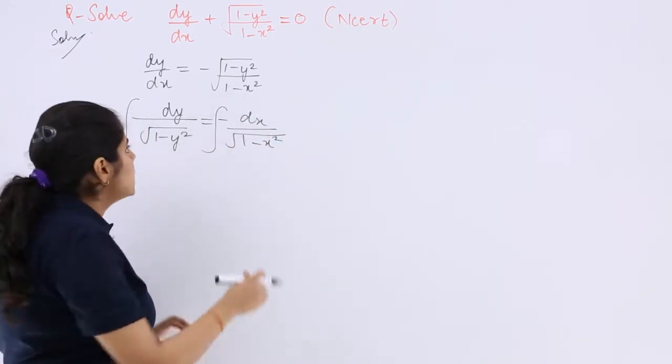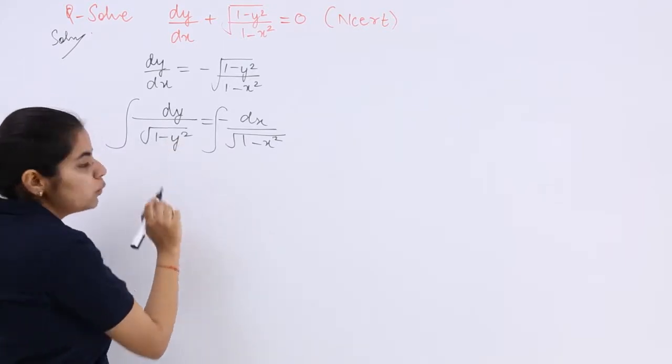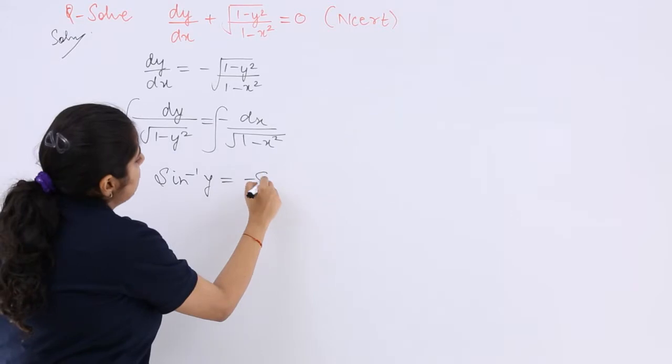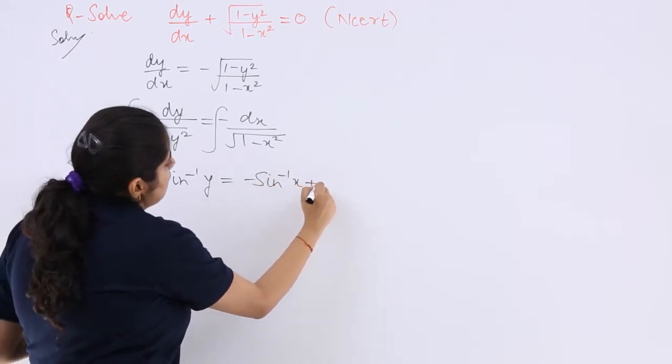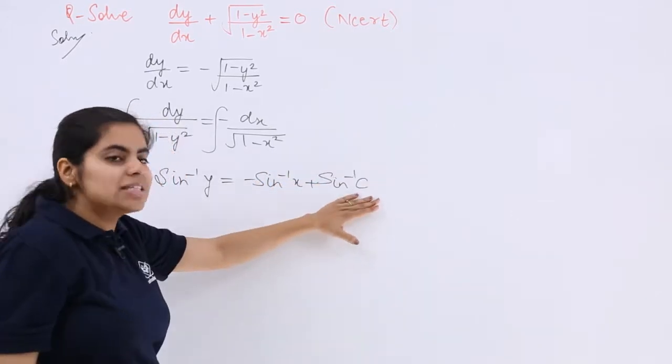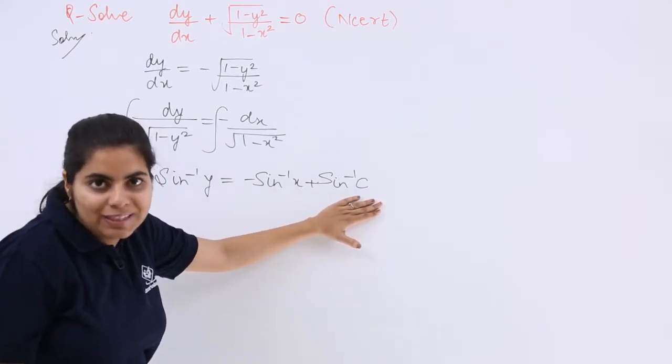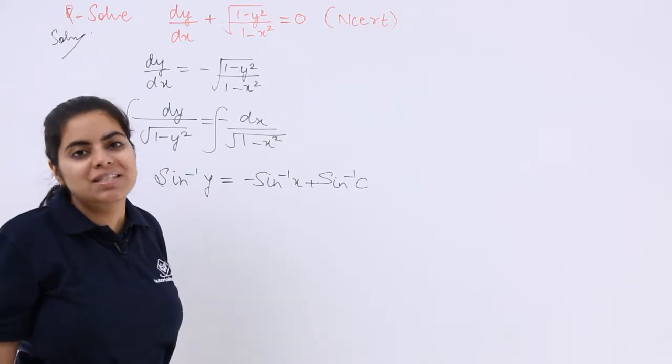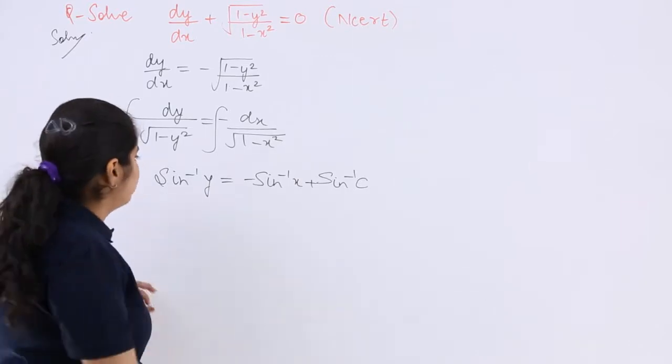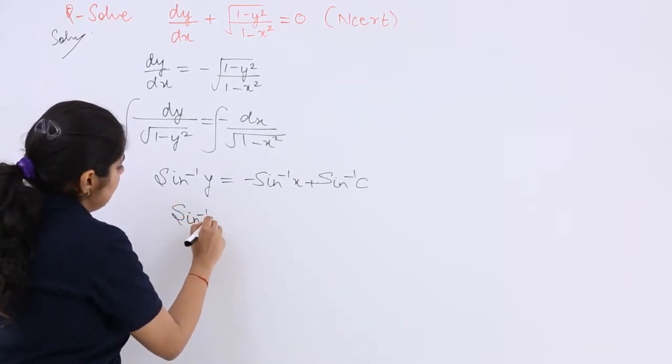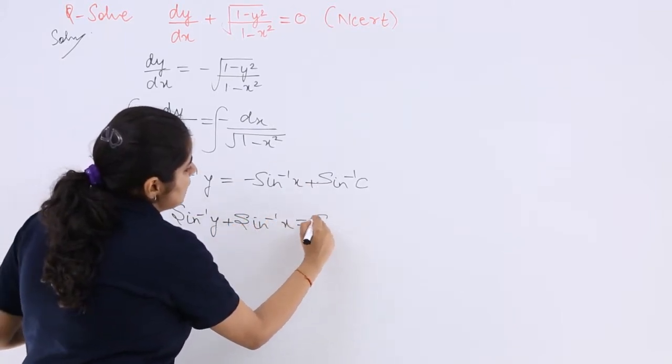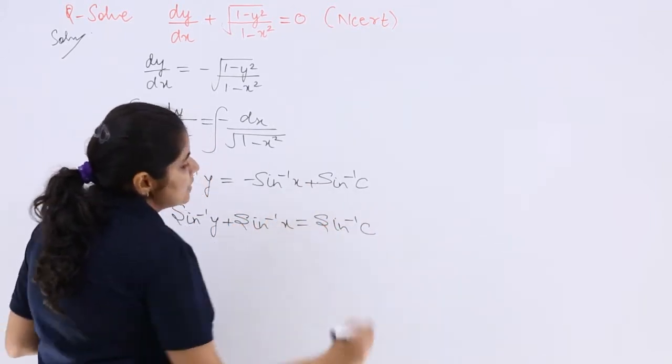Now it is dy upon under root 1 minus y square which is sin inverse y. Here it is minus sin inverse x plus sin inverse c. Because anyways, I had to introduce a constant of integration but since the question is moving in sin inverse, let's keep it sin inverse c. Now here it should be like sin inverse y plus sin inverse x which is equal to sin inverse c.